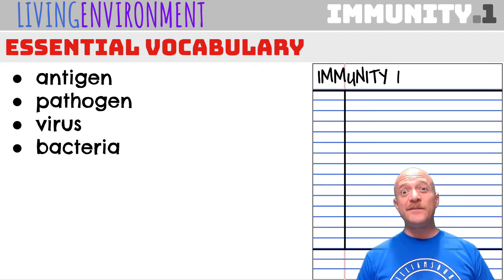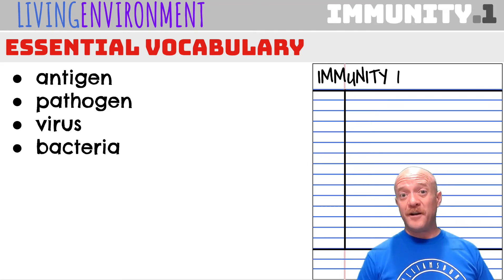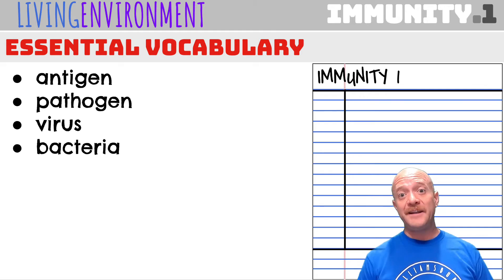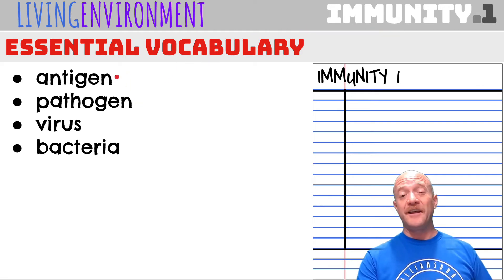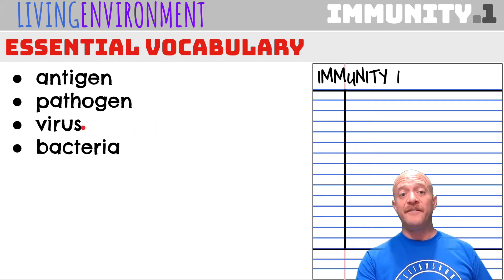Hey, this is the video for Immunity One. Go ahead and set up your Cornell Notes — remember to start a new page for this video, and check out the essential vocabulary. Today we will be looking at antigen, pathogen, virus, and bacteria.